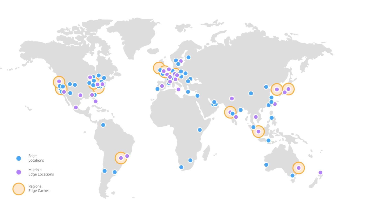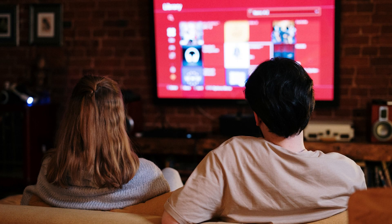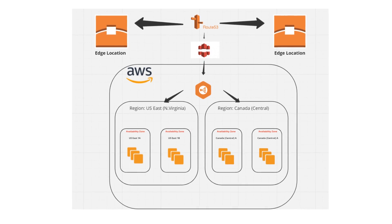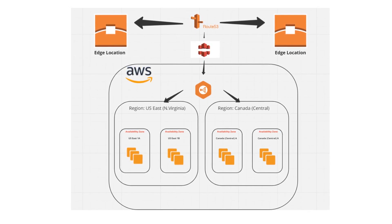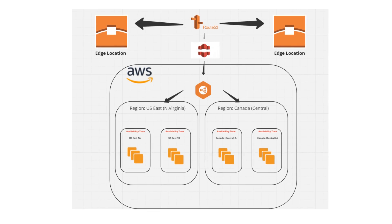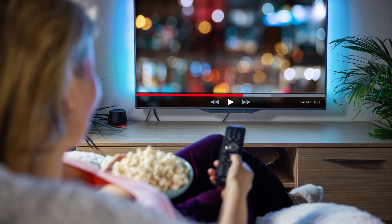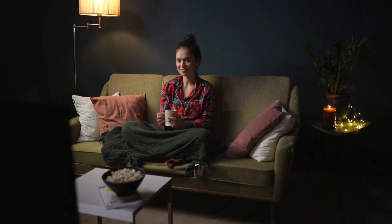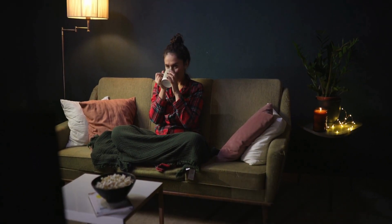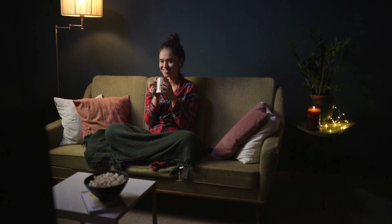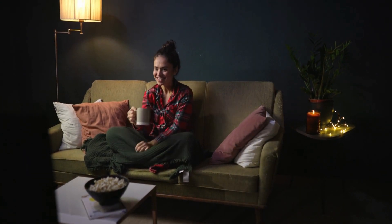Now, let's say a user in New York wants to stream a movie on Netflix. Instead of accessing the content from a distant location, Netflix brings that content closer to the user utilizing edge locations. An edge location could be a data center or a caching service strategically placed in or near New York City. By having edge locations, Netflix can stage or store popular movies or TV shows closer to end users, reducing latency and improving performance. When the user requests a movie, Netflix can deliver it quickly from the nearby edge location, resulting in faster streaming speed, lower buffering time, and overall a better user experience.